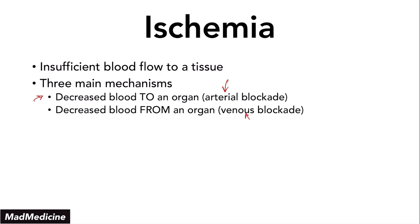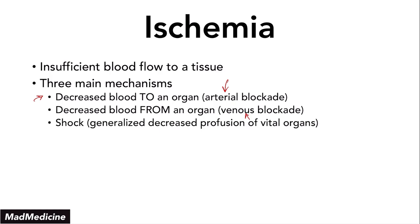Shock is different from arterial or venous blockade because you have generalized decreased perfusion to vital organs. When you have generalized decreased perfusion, vital organs are not going to survive long because they cannot handle stress well — they're very susceptible to damage when exposed to stress. In a setting of shock, you're going to see vital organs getting damaged very quickly.